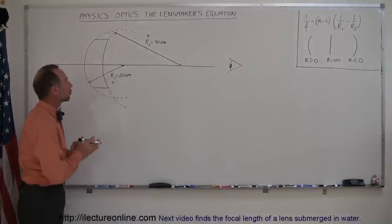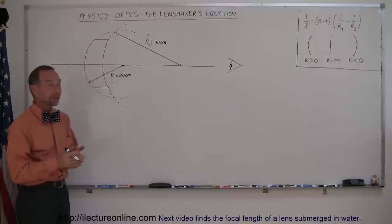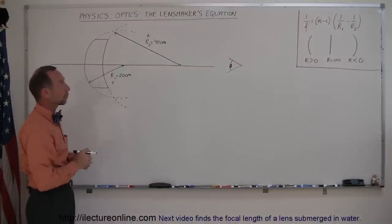Welcome to ElectronLine. Here's example number two of how to find the focal length of a lens, and so we're going to use the lensmaker's equation.